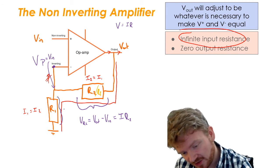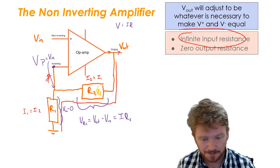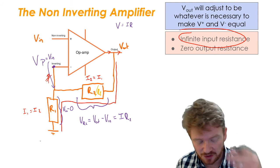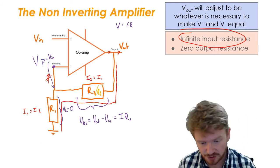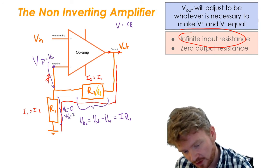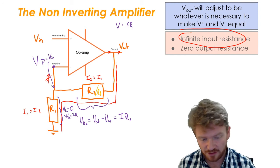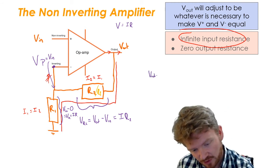Across R1, I can say that the potential drop is Vin take away 0. Because the other side is connected to ground here, so it's dropping down to 0. So it's just Vin. And I can say that that Vin is equal to the current running through it times R1. So I've now got these two equations. Vout minus Vin is equal to I times R2. And Vin is equal to I times R1.